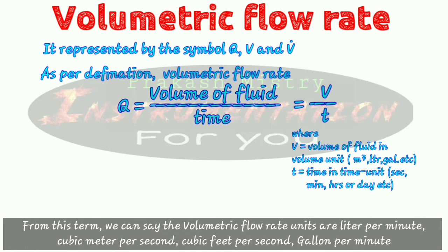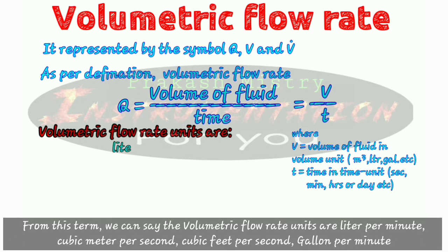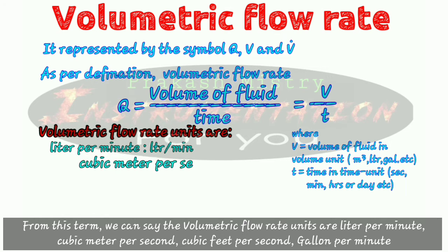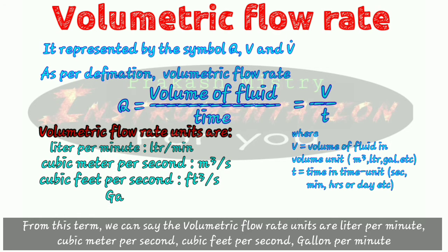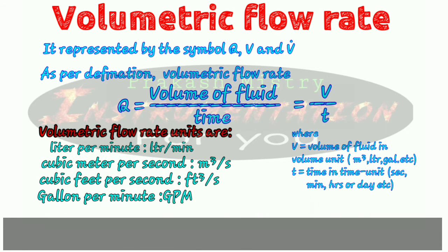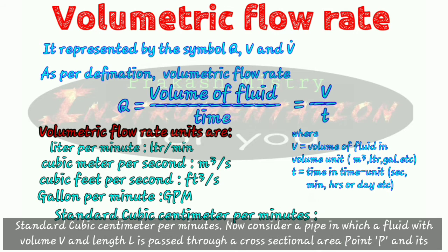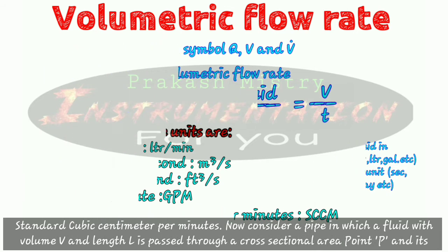From this equation we can say the volumetric flow rate units are: liters per minute, cubic meters per second, cubic feet per second, gallons per minute, and standard cubic centimeters per minute.